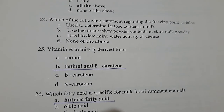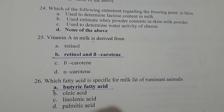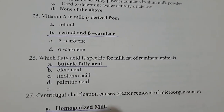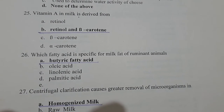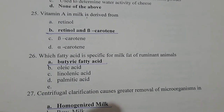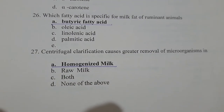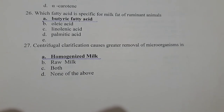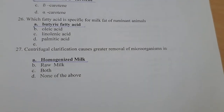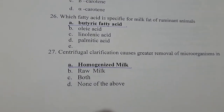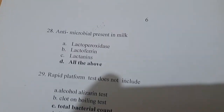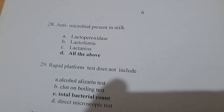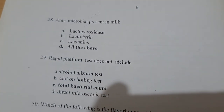Question 15: Vitamin A in milk is derived from retinol and beta-carotene. Question 16: The fatty acid specific for milk fat of ruminant animals is butyric acid. Centrifugal clarification causes greater removal of microorganisms in homogenized milk.